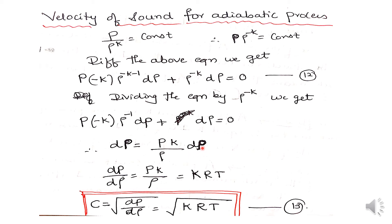Using the equation of state P/ρ = RT, we get dP/dρ = k·RT. Since C = √(dP/dρ), substituting gives C = √(k·RT). This is the final expression for the velocity of sound for the adiabatic process, called Equation 13.